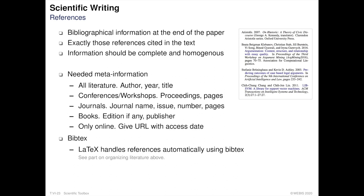Everything you cite should be included in the references at the end of the paper. They contain bibliographical information about every single source you gave in the text. Give at least the year, author, and title of every source. For conference publications, also provide the proceedings the publication comes from with page numbers. For journal publications, include the number and volume of the journal and pages of the paper. For books, provide the publisher and, if applicable, the edition. For online sources, give not only the URL but also an access date.